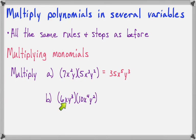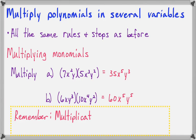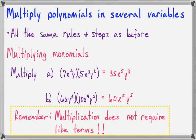Now let's multiply 6xy to the third times 10x to the fourth y squared. 6 times 10 is 60. x times x to the fourth is x to the fifth. And y to the third times y to the second would also be y to the fifth. Remember, multiplication does not require like terms. Addition does, but multiplication does not.